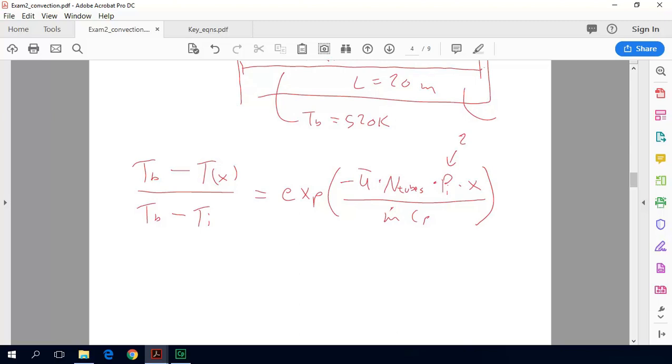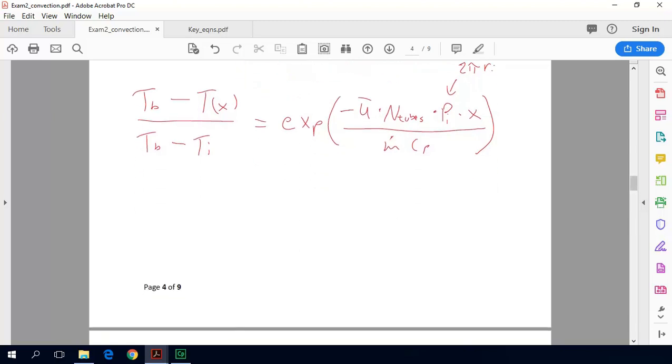Our perimeter is just 2 pi times the inner radius. So now we just rearrange this equation. We want to find T at X equals 8 meters. So we would just rearrange this equation and we would get this equals T sub B minus T sub B minus the inlet temperature multiplied by EXP times minus U bar times number of tubes times our perimeter times our X, which is 8 meters, divided by M dot times Cp.